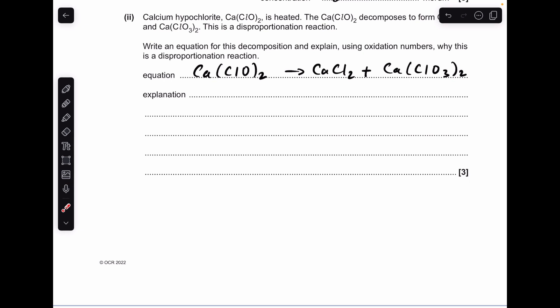For the next part there's the unbalanced equation. I've just put this information into an equation. I'm going to use oxidation numbers to balance this one and obviously we can use that to explain why it's disproportionation. So there's the oxidation numbers of all the chlorine species.